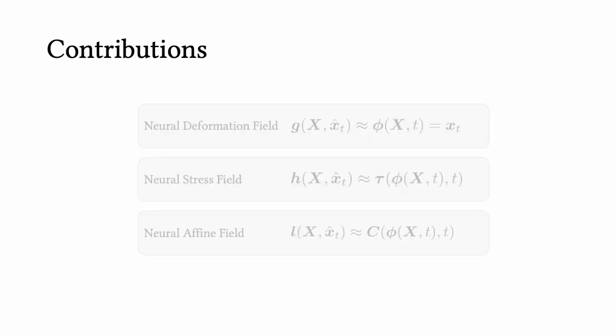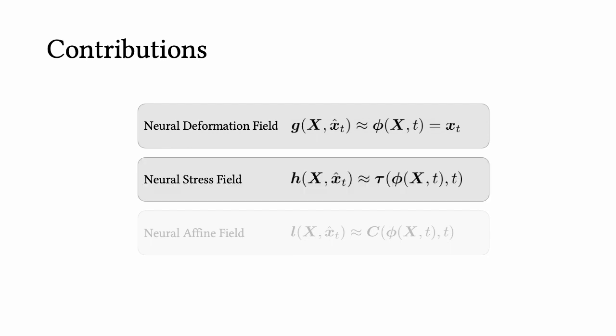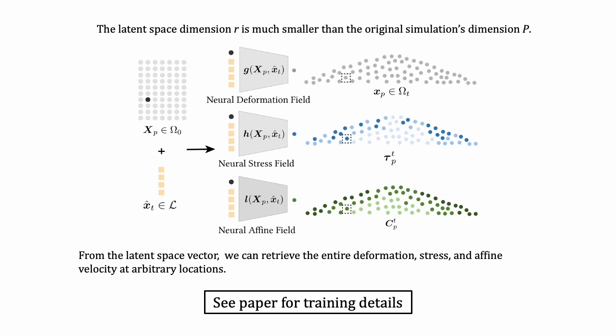To achieve this, we reduce the full-order high-dimensional MPM simulations via three low-dimensional manifolds: a neural deformation field that captures the deformation map, a neural stress field that captures the Kirchhoff stress, and an additional neural affine field that captures the affine momentum. All these neural fields share the same latent space. The latent space vector x-hat has a dimension of r, which is much smaller than the original simulation's dimension P.